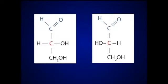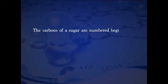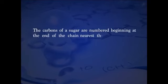When the hydroxyl group on the reference carbon is on the right in the projection formula, as in D-glyceraldehyde, the sugar is the D-isomer. When on the left, as in L-glyceraldehyde, it is the L-isomer. Of the 16 possible aldohexoses, 8 are D-forms and 8 are L-forms. Most of the hexoses of living organisms are D-isomers. The carbons of the sugar are numbered beginning at the end of the chain nearest the carbonyl group.